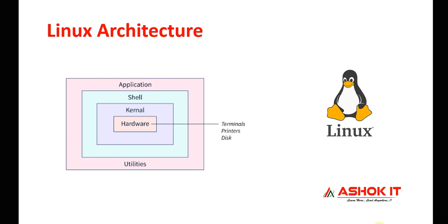Coming to the Linux architecture, Linux will maintain a layered architecture. As you see in the diagram, you can run applications in the Linux machine, then shell will be available, kernel will be available, hardware will be available. Hardware means devices, drivers, printers, some terminals will be available.